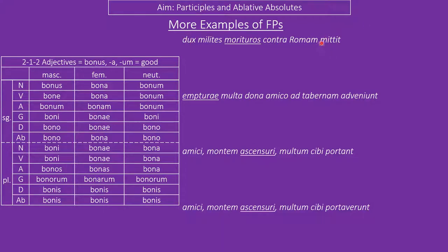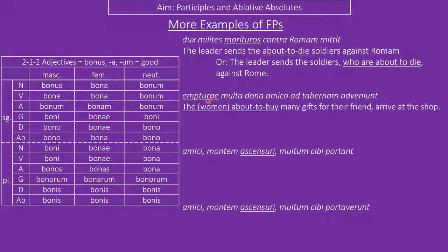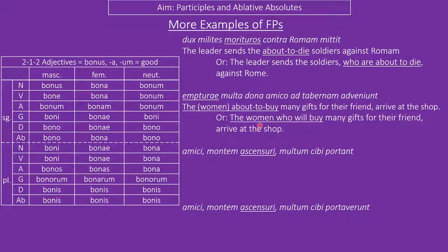The leader sends the moritouros soldiers — notice these are both accusative masculine plural — the leader sends the about to die soldiers against Rome, or 'the leader sends soldiers who are about to die against Rome.' Future participles are quite hard to leave as-is, so you will normally rewrite them. The about to buy things — empturae is a nominalised adjective, feminine plural: the women about to buy arrive at the shop. The women are about to buy many gifts for their friend, or 'the women who will buy many gifts.' We know it's women because it's feminine.